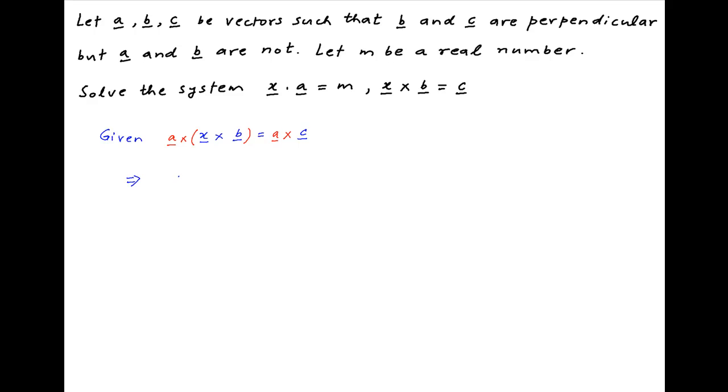The left hand side is a vector triple product whose value is equal to A dot B times the vector X minus A dot X times the vector B, and the right hand side is equal to vector A cross vector C.